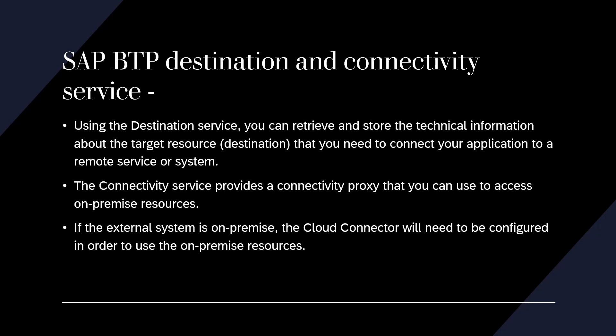That covers Unit 5, which talks about extensibility and connectivity in CAP applications. In the next video, we will go through the exercise and do the step-by-step implementation of all these extensibility and connectivity concepts in our application — specifically connecting our risk management application to the remote Business Partner service from the SAP API Hub.